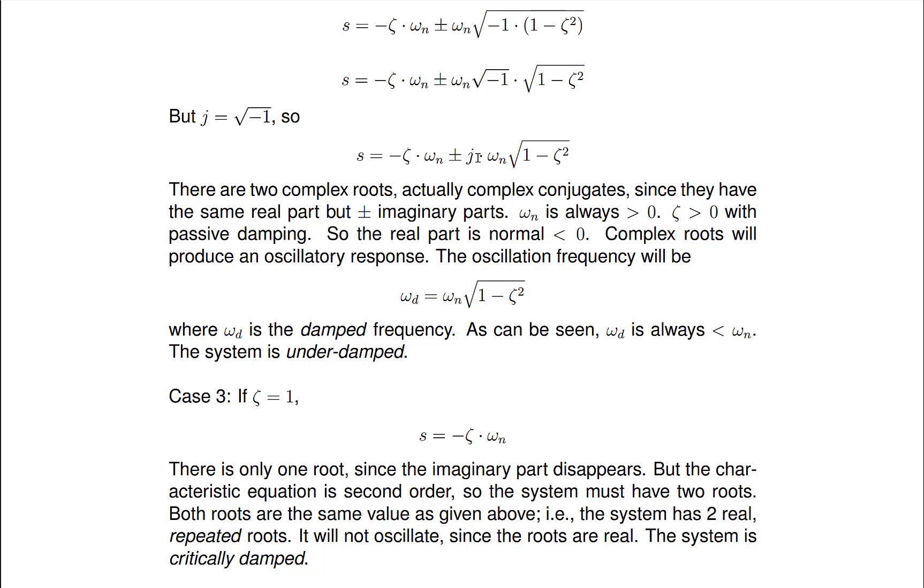This will produce an oscillatory response. And the frequency of oscillation is the coefficient of the j term. So we actually give that a name. It's called the damp natural frequency. So the system does not oscillate at its natural frequency. It oscillates at the damp natural frequency. But as you can see here, since zeta is less than 1, this number will be less than 1. And so omega d is less than omega n, which means that the effect of the damping is to actually slow the system down.